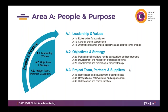The last part of people and purpose is project team, partners, and suppliers. We look at three elements. First, identification and development of competences — and it doesn't say only competences of the project team. We're looking at competences overall, because if you have incompetent partners or suppliers and don't do anything about it, your project is equally destined to fail as if you had incompetent team members. We want the project manager to know the full picture of competences across all project participants and make sure development needs are addressed.